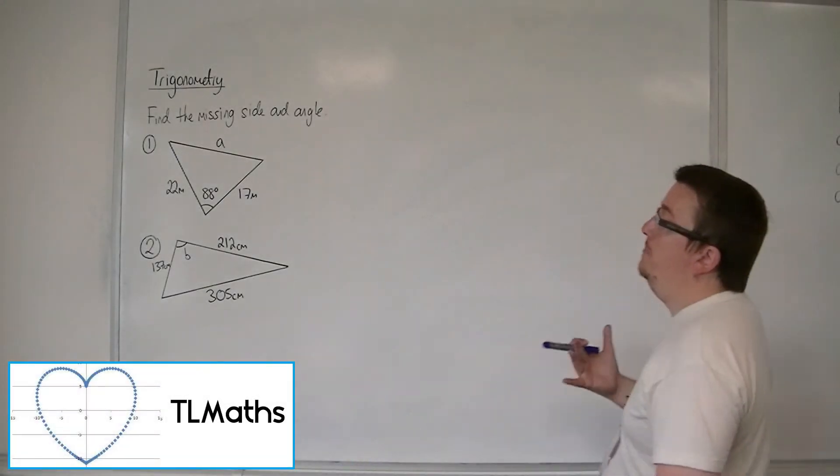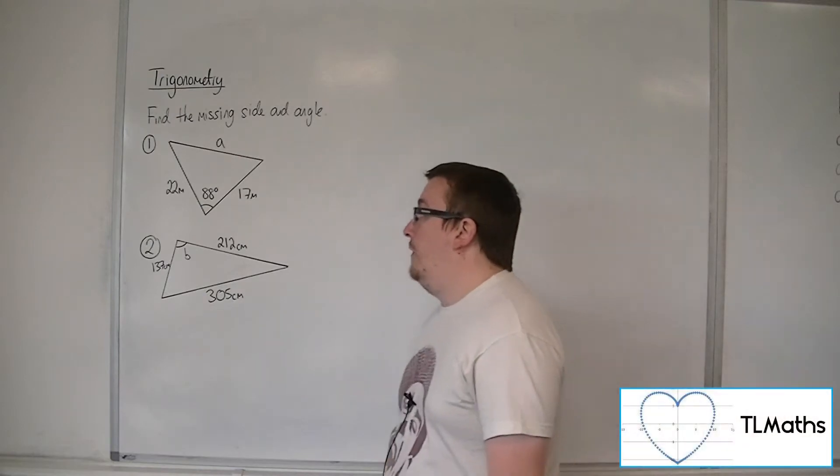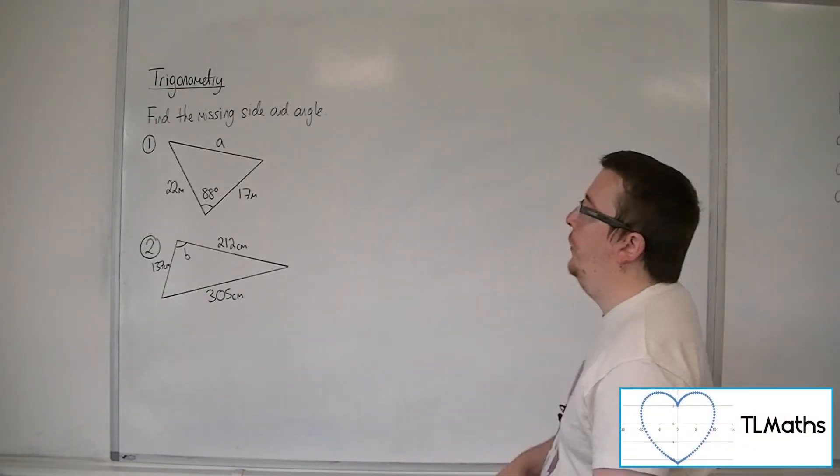Let's say I want to find the missing side and angle in these two diagrams. Both of these I'm going to have to use the cosine rule.